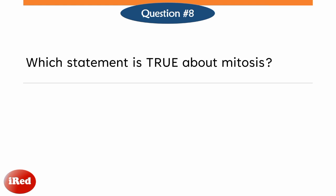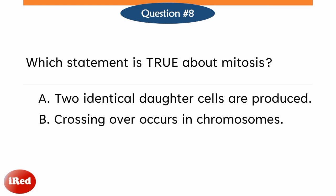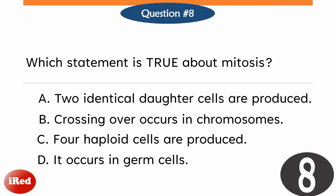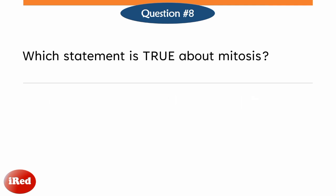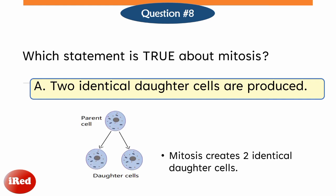Question number eight. Which statement is true about mitosis? Letter A, two identical daughter cells are produced. Letter B, crossing over occurs in chromosomes. Letter C, four haploid cells are produced. Or letter D, it occurs in germ cells. The correct answer is letter A, two identical daughter cells are produced. Mitosis creates two identical daughter cells.